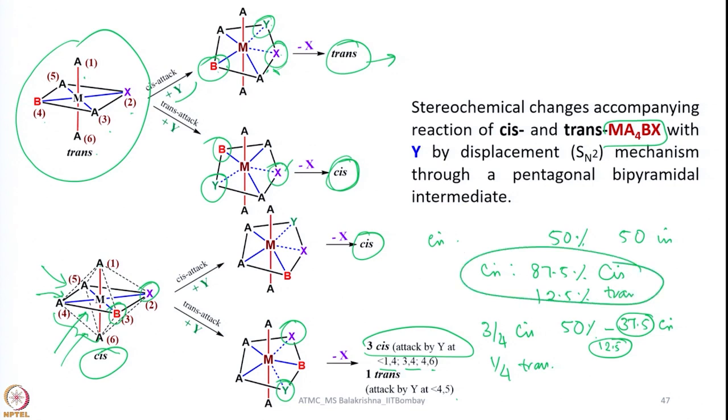So, considering 50% possibility of cis attack and 50% possibility of trans attack, a cis starting material can give 87.5% cis and 12.5% trans. This is with normal monodentate ligands. If you have a bidentate ligand, some positions are blocked for the entering ligand, resulting in fewer or preferred orientations for cis or trans attacks. It is very interesting to take tridentate, bidentate, or tetradentate ligands — and also bulky ligands — to establish the stereochemical changes accompanying these substitution reactions. Problems can also be found in standard textbooks dealing with reaction mechanisms.